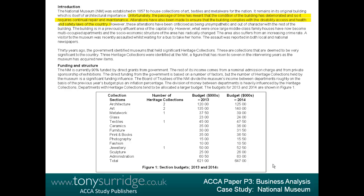However, these alterations have been criticized as being unsympathetic and out of character with the rest of the building. The building is in a previously affluent area of the capital city. However, what were once large middle-class family houses have now become multi-occupied apartments, and the socioeconomic structure of the area has radically changed. The area also suffers from an increasing crime rate. A visitor to the museum was recently assaulted whilst waiting for a bus, and the assault was reported in both local and national newspapers. The decay of the neighbourhood and increasing crime rate is a social problem — I color it green.